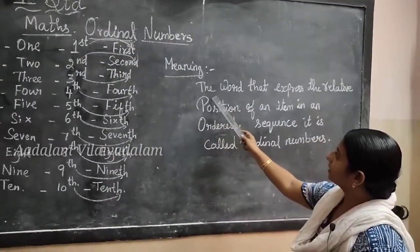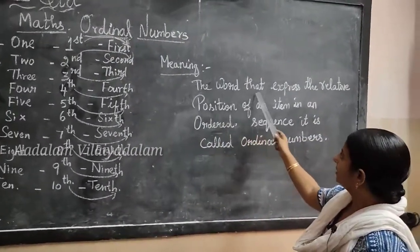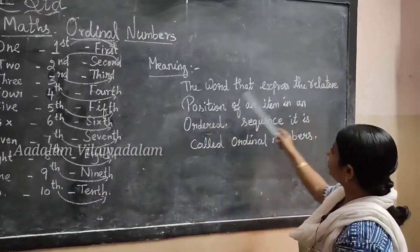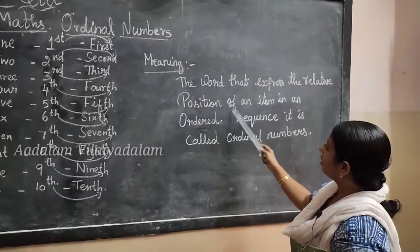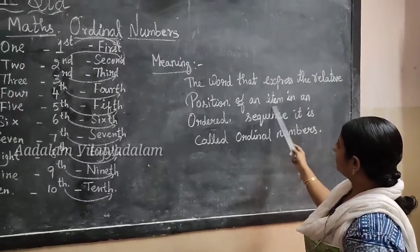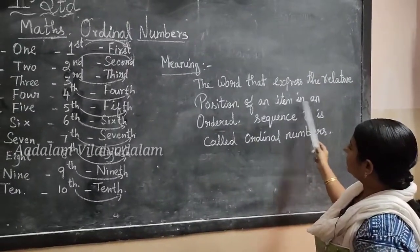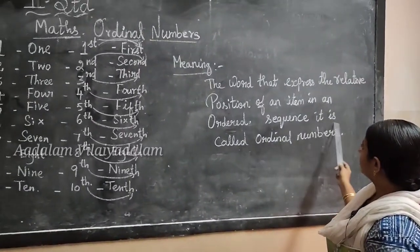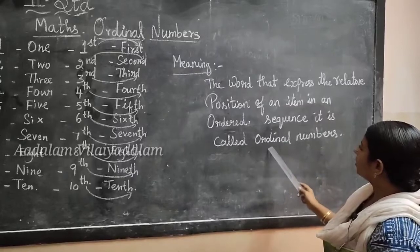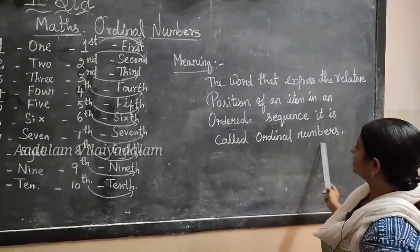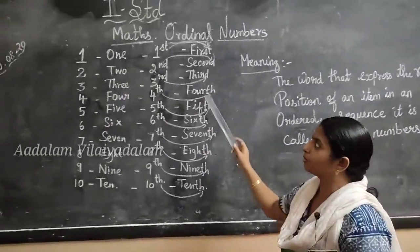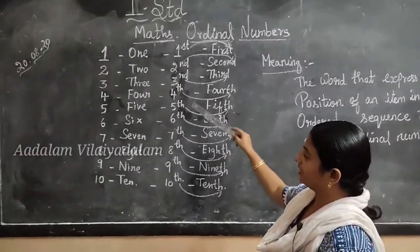The word that expresses the relative position of an item in an ordered sequence is called ordinal numbers. Now let's see how to write the ordinal numbers.